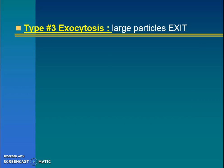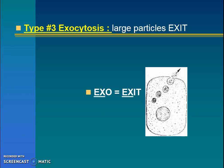The last example is how large particles exit the cell — exo, exit. We call this exocytosis. This is usually how we get rid of waste particles. A bunch of waste particles, maybe digested by the lysosome, get put into a circular package. That package is sent to the cell membrane where it merges with it, and those particles are able to exit.